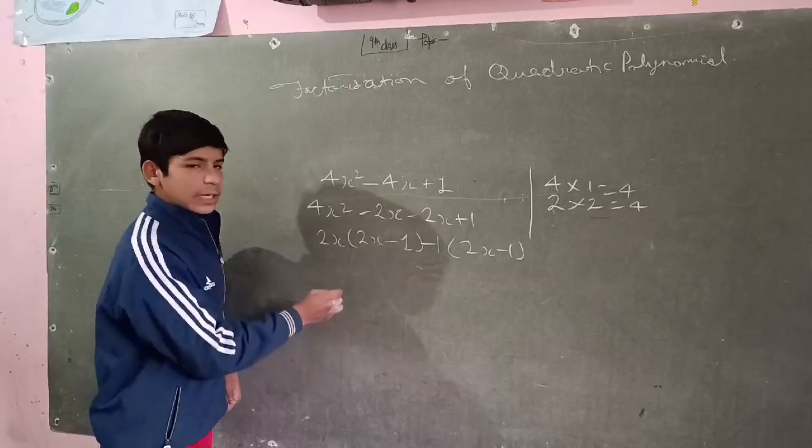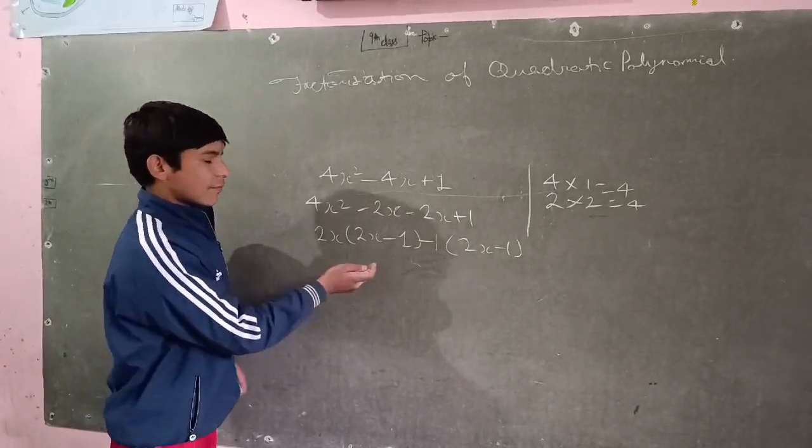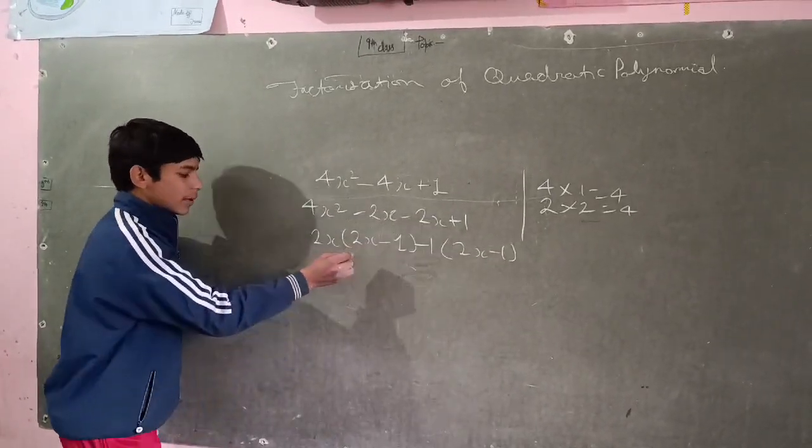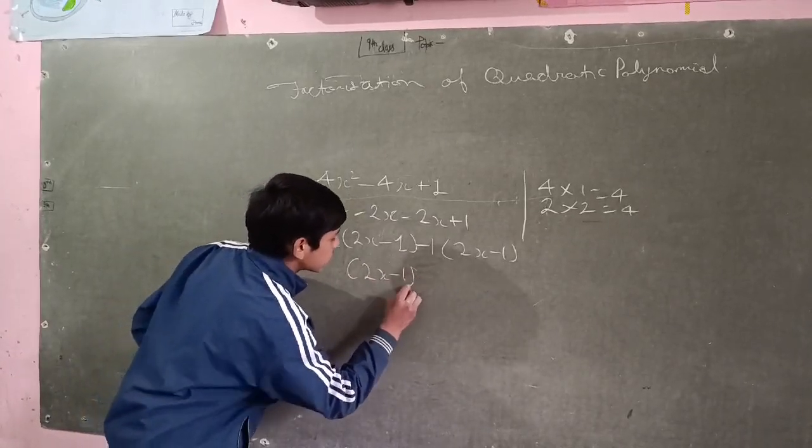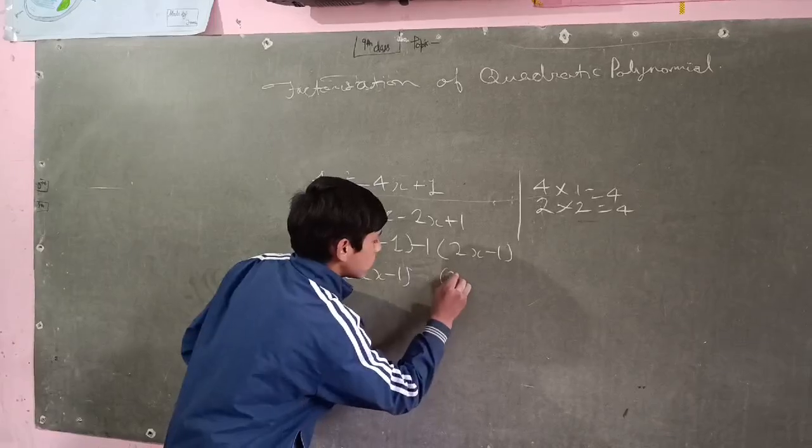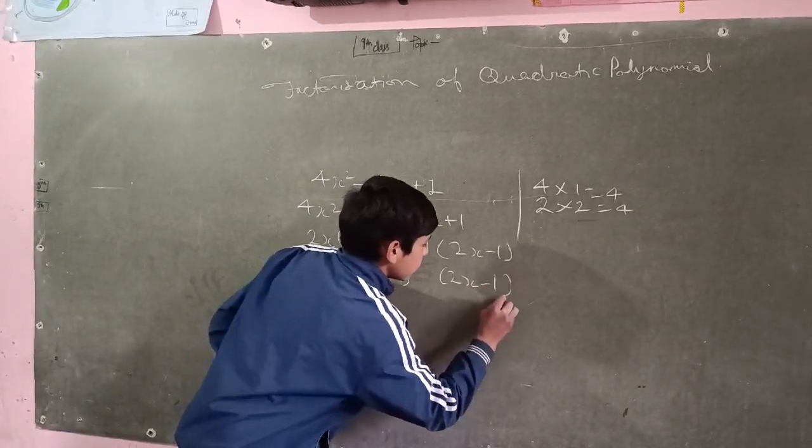Now we again find common factor. 2x minus 1 and 2x minus 1.